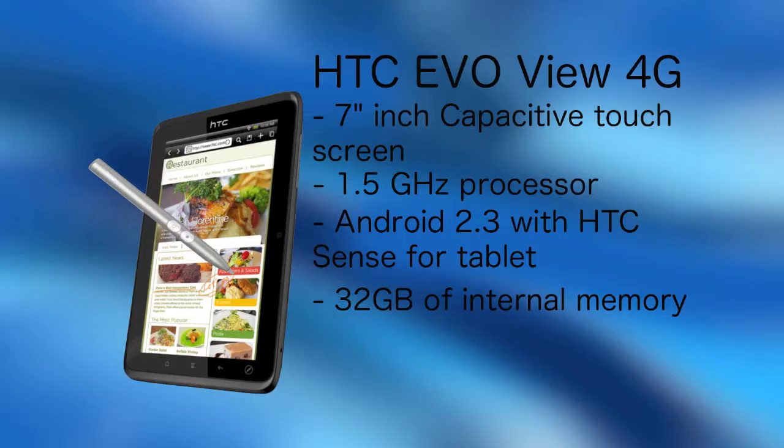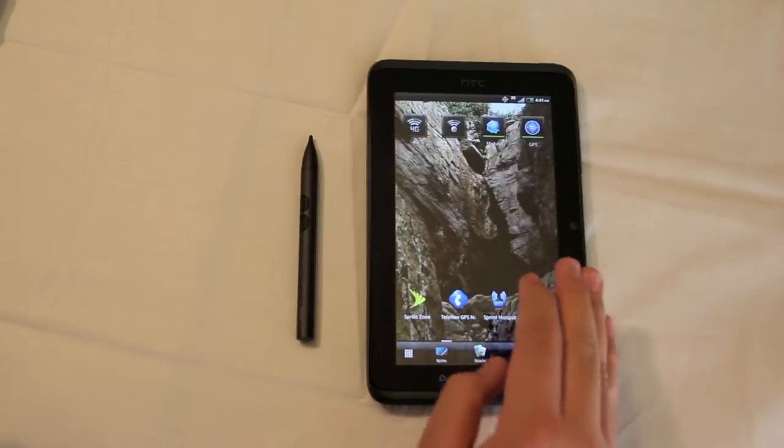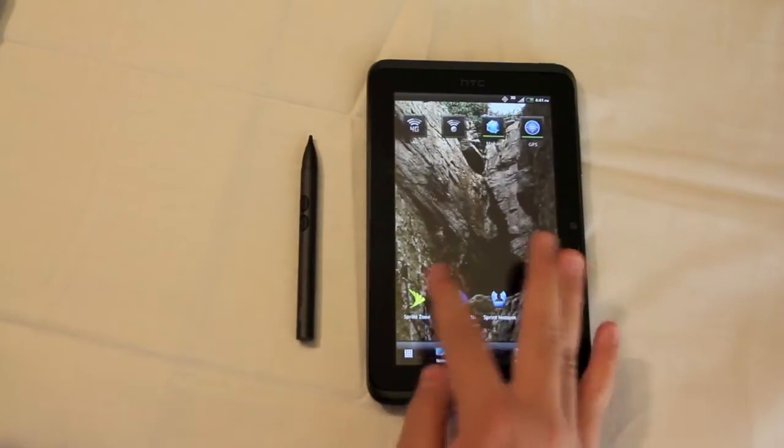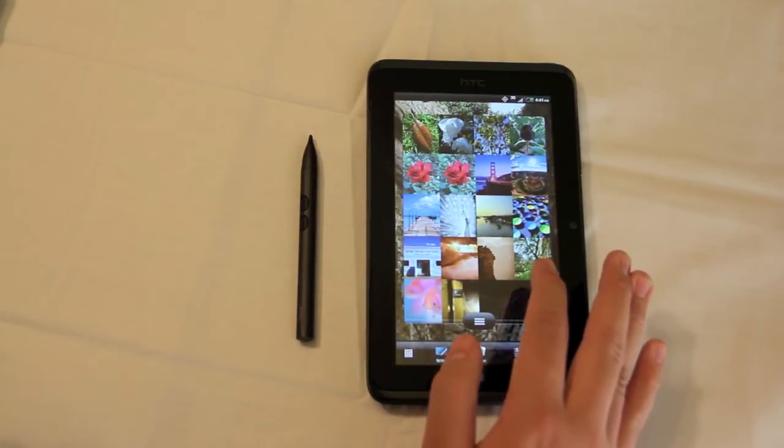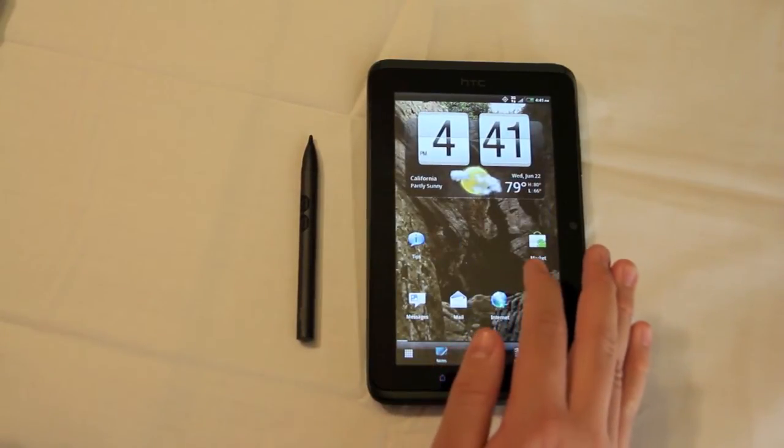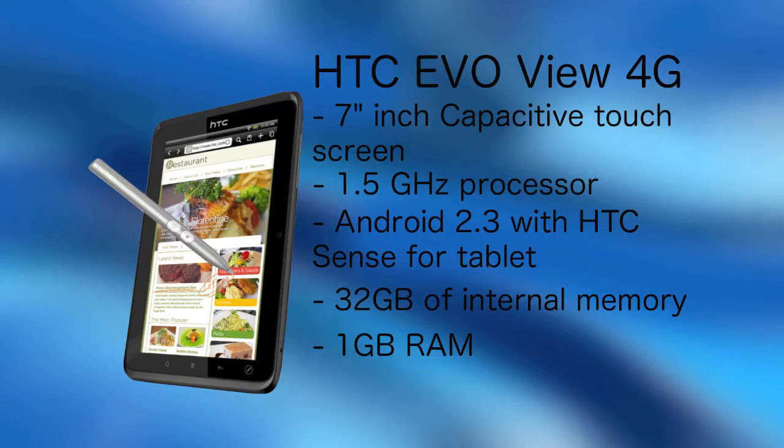It also includes 32GB of internal memory, which is great, so you have enough room to store all your videos, music, apps, anything you could want. It's just a ton of room to store whatever you need. As well as 1GB of RAM, which is a ton of RAM for this little device.